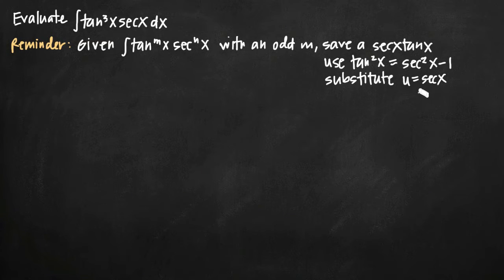So you can use this strategy when you have an odd power of tangent. You can use a similar but different strategy when you have an even power of secant, and I have another video on that. Anything else that's a product of tangent and secant is a little more ambiguous and you'll have to figure it out case by case. But whenever you have a product of tangent and secant with either an odd power of tangent or an even power of secant, you can use a specific method.